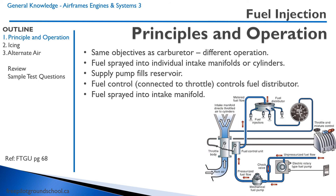If you recall from the carburetor, we have a bulk amount of fuel being added to a bulk amount of air, and that gets distributed to the intake manifold. A fuel injection system operates slightly differently. Fuel is sprayed into the individual intake manifolds or cylinders. This is what allows for the more equal fuel distribution compared to the carburetor. The way a fuel injection system works is a supply pump fills a reservoir in the fuel injection unit, and the fuel control connected to the throttle controls the fuel distributor.